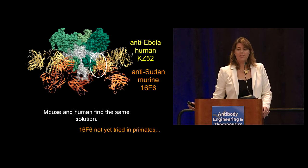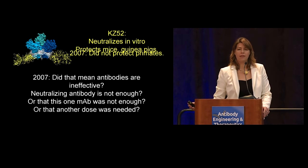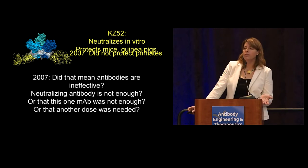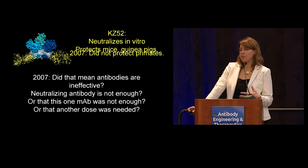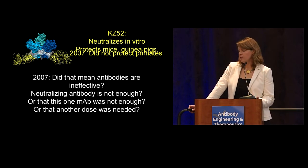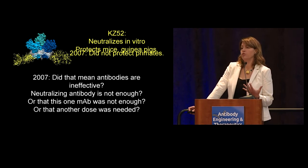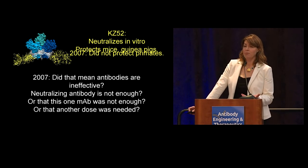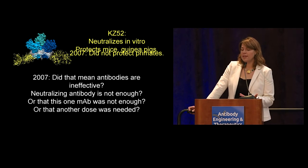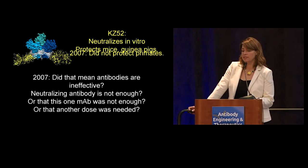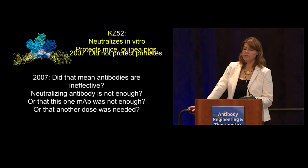16F6 hasn't yet been tried in primates, but KZ52 had. Even though KZ52 neutralizes really potently in vitro and protects both mice and guinea pigs from lethal challenge, it was unable to protect non-human primates. At the time that was the best antibody known against Ebola virus, so the field thought: if the best we have isn't good enough, does that mean there's any hope for antibodies against this virus? Maybe it replicates too quickly, or maybe the fact that a single viral particle can be a lethal dose for a primate means antibodies aren't a good solution. The field wondered whether neutralizing antibody wasn't enough, whether one antibody delivered by itself wasn't enough, or whether primates needed another dose to knock the viral load down long enough for the immune system to take over.